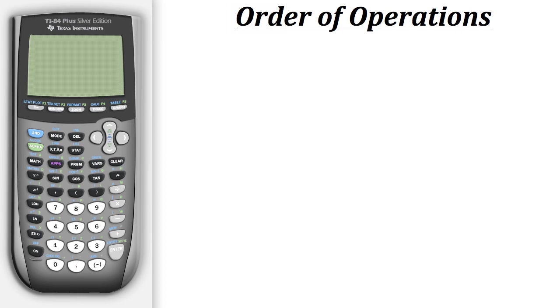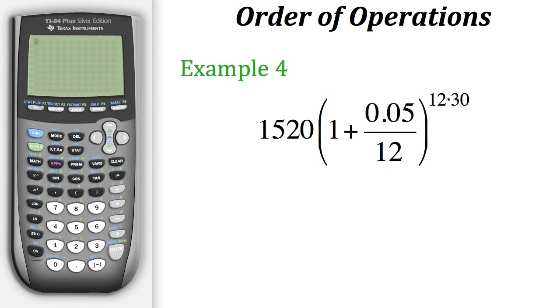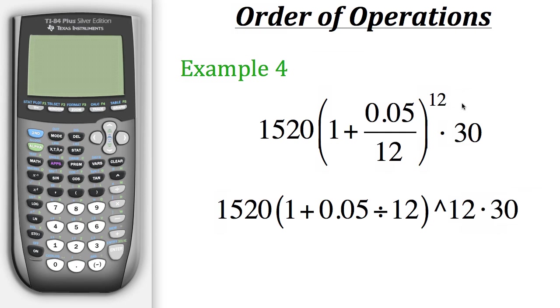Now let's take a look at just one more example. So here we have 1520 times the quantity 1 plus 0.05 over 12, all raised to the 12 times 30. Well when we see an expression like this, we tend to want to put it in the calculator exactly how we see it, which would look something like this. Now the problem with that is that our quantity in the parentheses here will only get raised to the 12 and not to the 30. So instead of raising it to the 12 times 30, we'll just raise this parentheses to the 12 and then afterwards multiply the result by 30, giving us an incorrect answer.